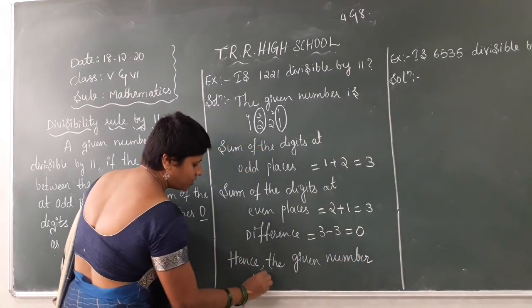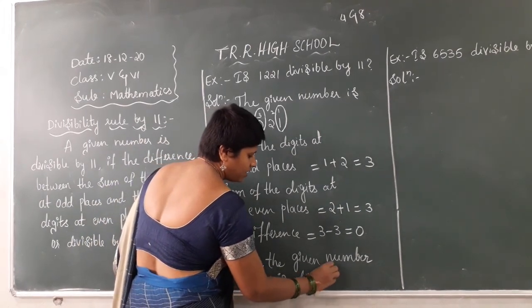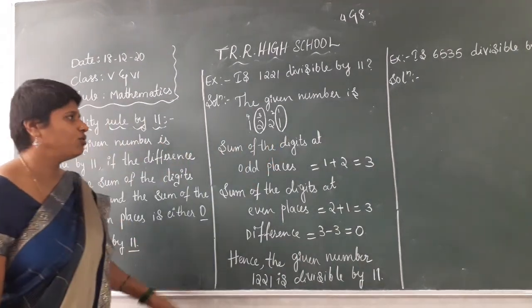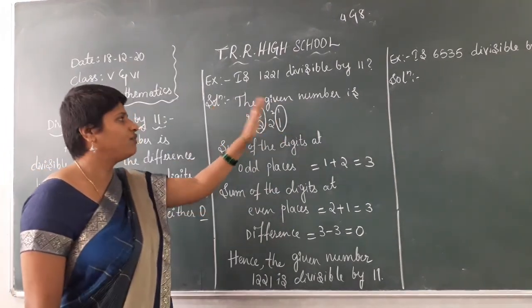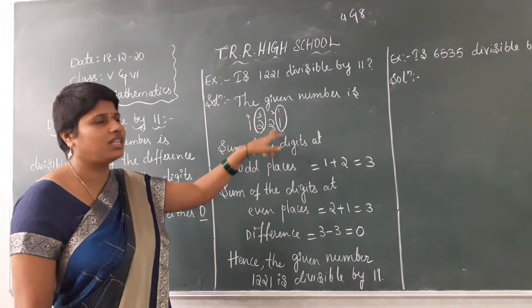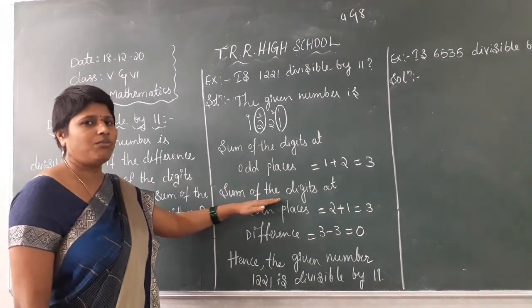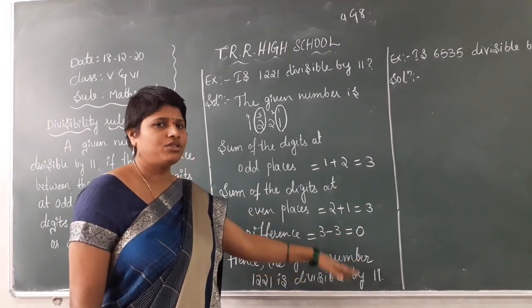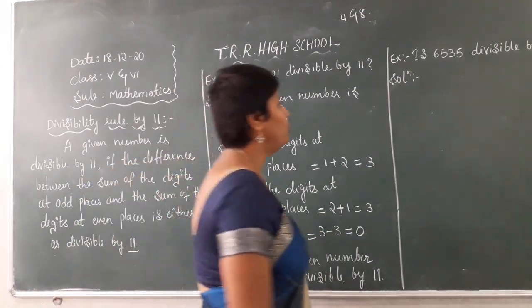This is how you have to find it. Most students get confused here. You have to give numbering from right to left: 1, 2, 3, 4, 5 — however many digits you have. Circle only the numbers in odd positions, add up the odd-place digits, add up the even-place digits, then find the difference. If you get 0 it is divisible by 11. If you get any multiple of 11 — like 22, 33 — then also it is divisible by 11. Now we will see one more example.